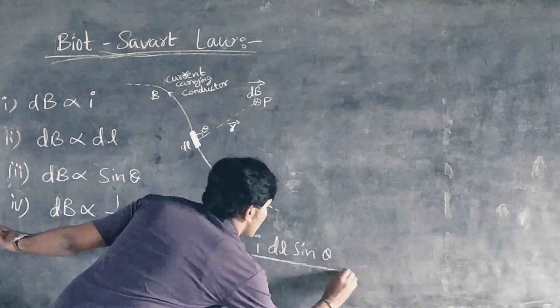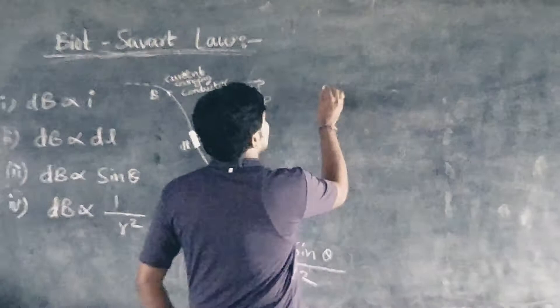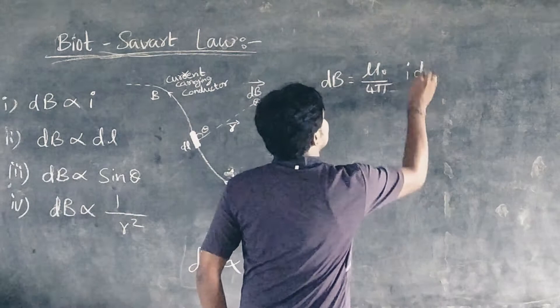When the conductor is placed in vacuum or air, the equation can be written as dB equals mu naught by 4 pi I dl sin theta by r square.